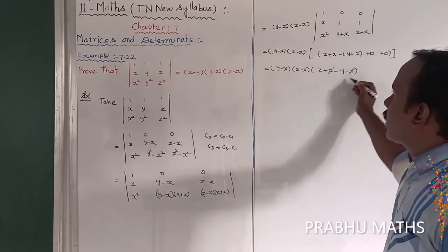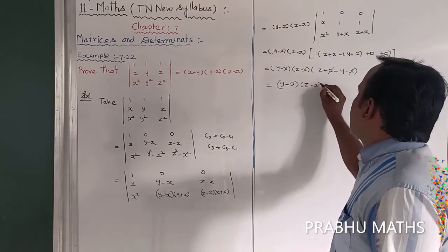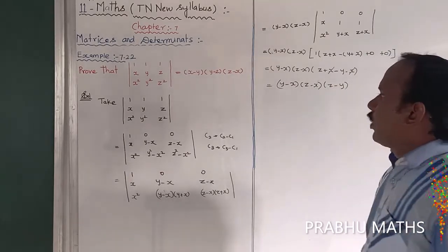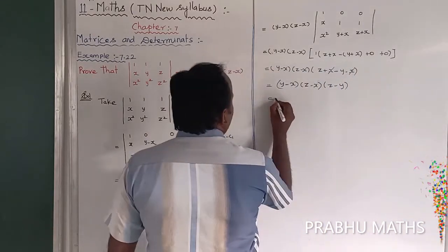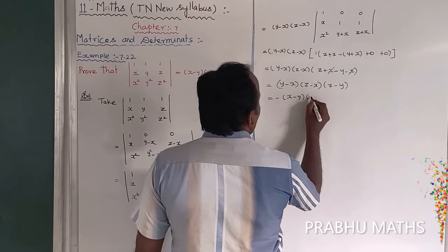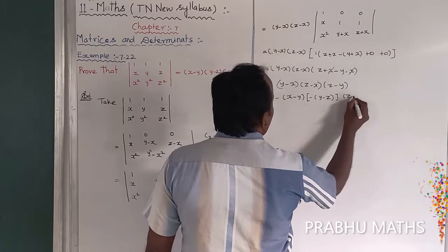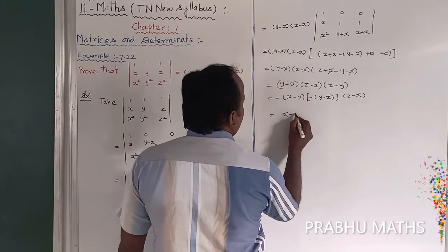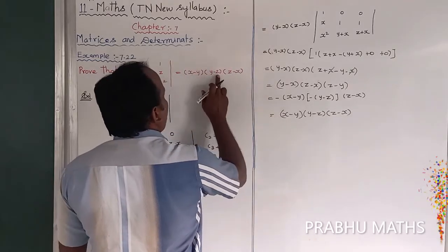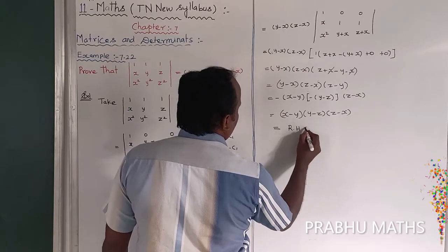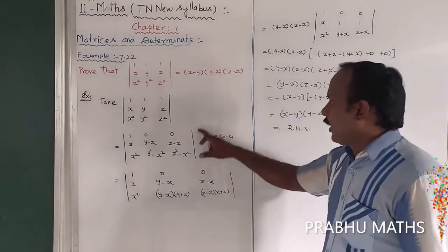The x terms cancel, leaving (z − x). So the result is (y − x)(z − x)(z − y), which rearranges to (x − y)(y − z)(z − x). This completes the proof. This is why we use the column operation rule.